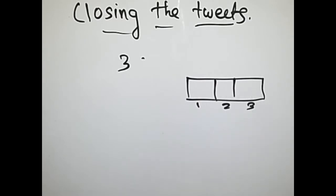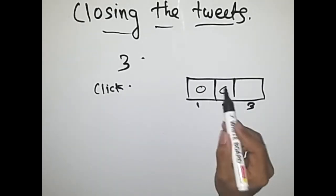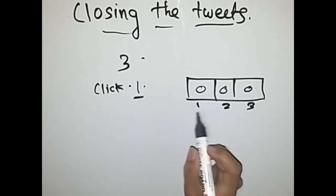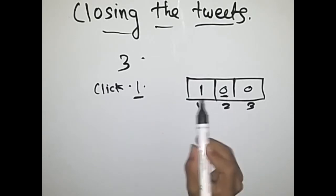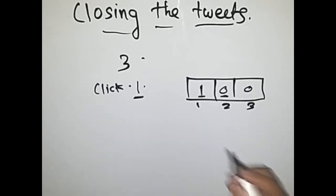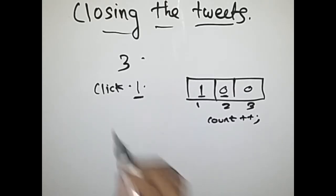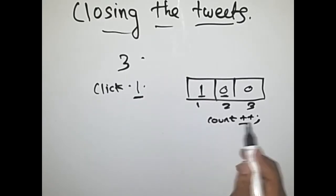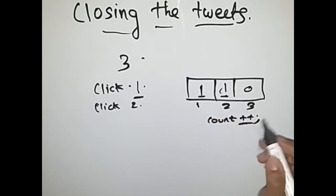The first element indicates tweet number one, second indicates tweet number two, tweet number three. The first input was 'click one'. Initially all tweets are closed so we initialize each element to zero. Then for 'click one', we make index zero equal to one because the tweet is open — zero indicates closed and one indicates open. We also increment the count so we don't have to traverse the array each step. After clicking, we do count plus plus. If the element is zero, we make it one and increment the count. The second example is 'click two': this index is zero so it becomes one and count plus plus.